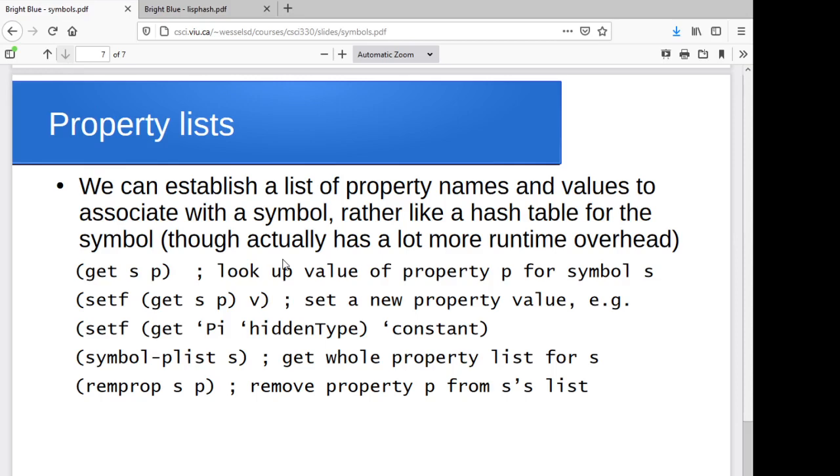The last thing that I wanted to mention associated with symbols is the idea of property lists. Sometimes we're going to want to associate extra data beyond just the value associated with a variable, or with a symbol. We might want to store a little bit of extra information. There's a get function that will actually look up the value of a specific property associated with a symbol. You give it the symbol that you're interested in and the property that you're interested in, and it looks up the value of that property for that symbol, or nil if it doesn't exist.